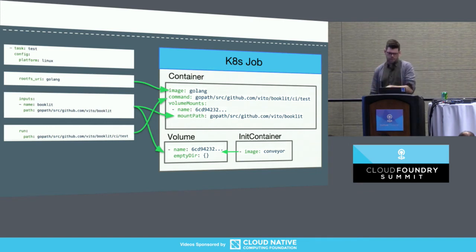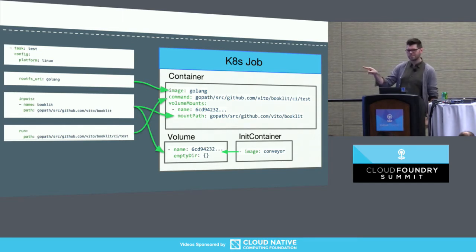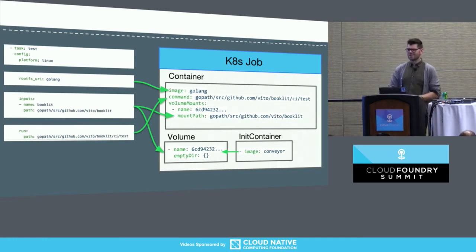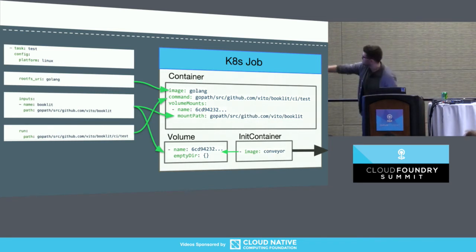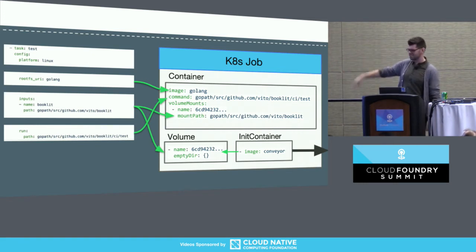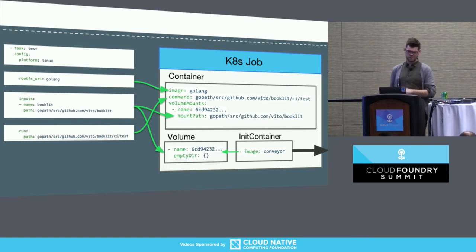But Kubernetes has these cool things called init containers. So I actually created a special image called conveyor, which basically talks to baggage claim deployed inside of Kubernetes — giving me a volume server inside the cluster. It's a total hack job, but it worked for the demo. Kubernetes also has volumes, and this is one of the big open questions for me: how to better leverage Kubernetes volumes to avoid this weird init container that talks out to baggage claim and make everything more centralized inside the cluster.